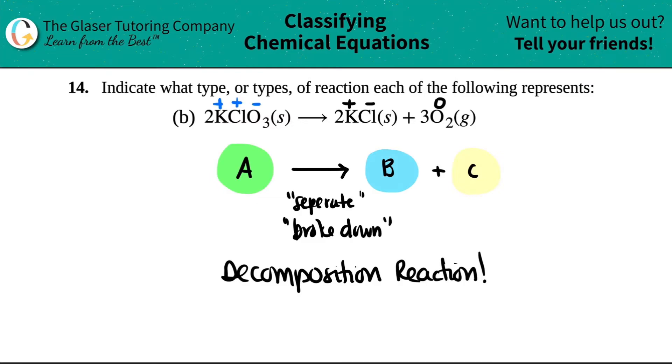And if you see at least one element changing charge, so for example, this oxygen was a negative, and then it turned into a zero charge. These are oxidation state changes.